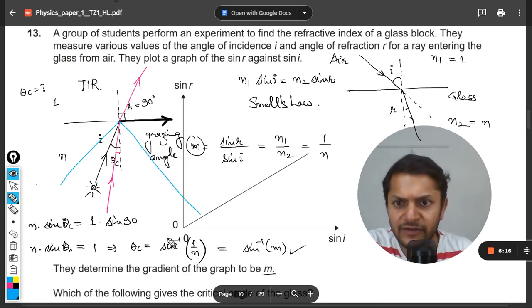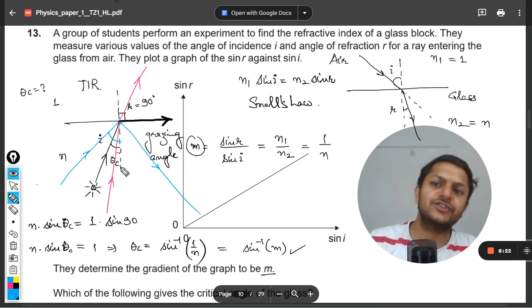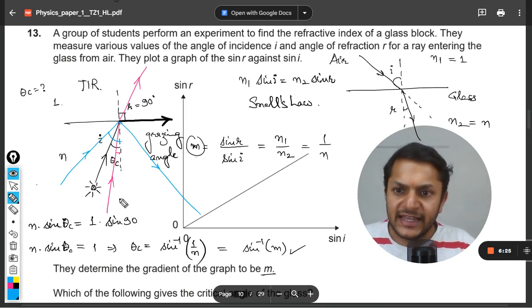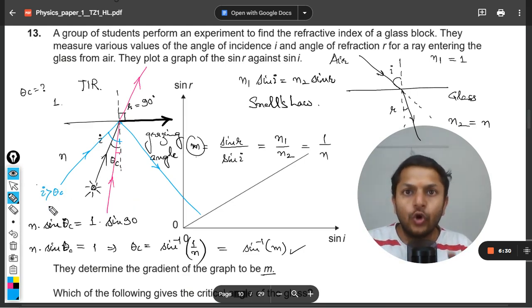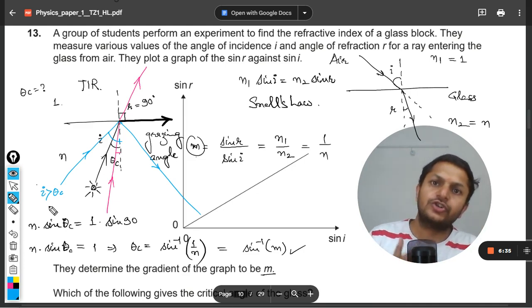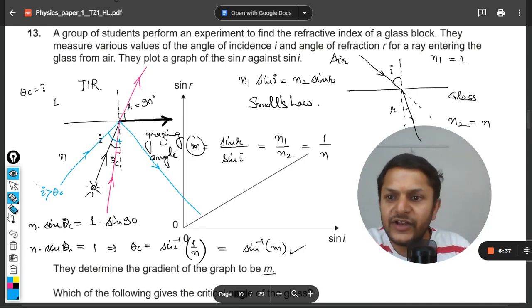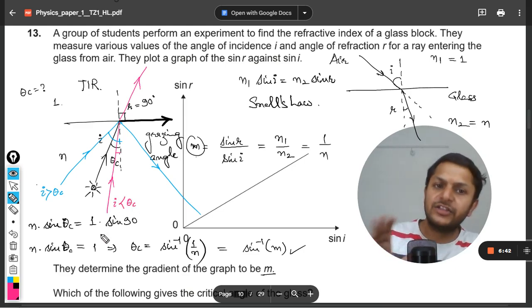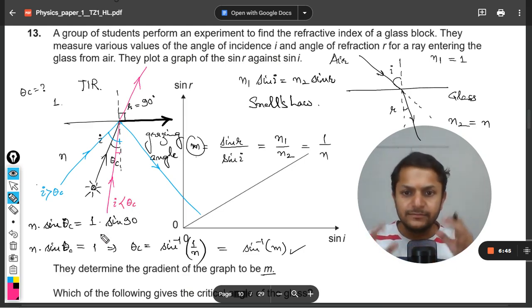...so it will be getting reflected back into the medium. This is what is the essence of theta critical. So if the incidence angle is greater than theta critical, total reflection takes place for the radiation internally. And if I talk about the line drawn in pink, the incidence angle should be lesser than theta critical.